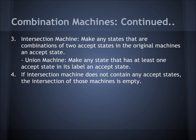For an intersection machine, you make any states that are combinations of two accept states in the original machines an accept state. For a union machine, you make any state that has at least one accept state in its label an accept state. If it's an intersection machine that does not contain any accept states, the intersection of those machines is empty.